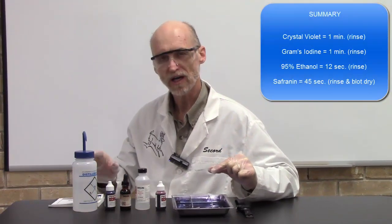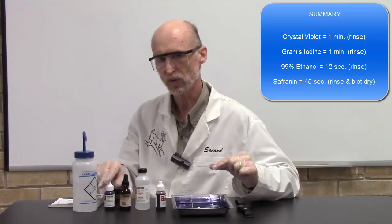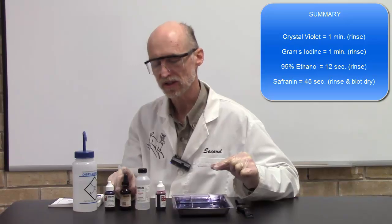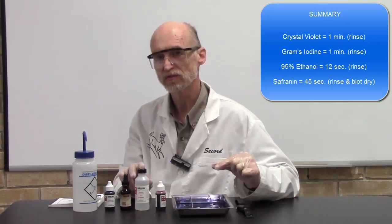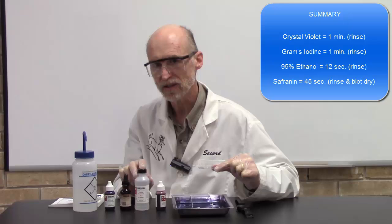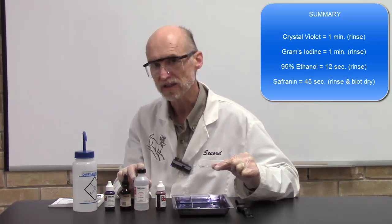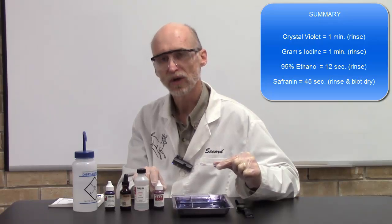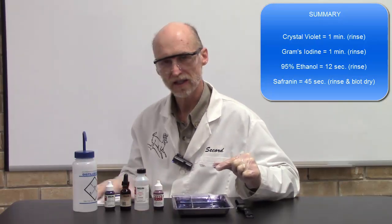Let me go over your times again. We put on crystal violet for one minute and rinsed. We put on iodine for one minute and rinsed. We put on decolorizer for 12 seconds, rocked it back and forth, and immediately rinsed. We then put safranin on for 45 seconds, rinsed the slide, and blotted it dry.